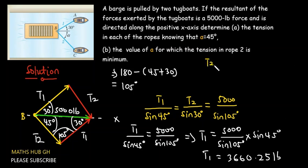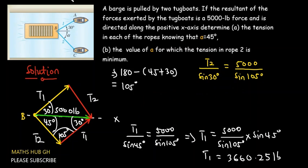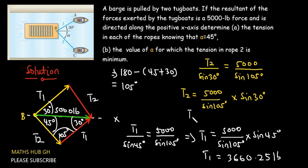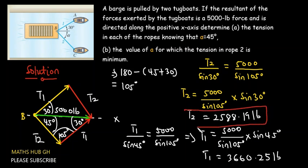Now let's find T2. For T2, you have T2 divided by sine of 30 degrees equal to 5000 divided by sine of 105 degrees. Solving for T2: T2 equals 5000 divided by sine of 105 degrees, multiplied by sine of 30 degrees. This gives us a value of 2588.19 pounds. That is the value of T2. That's how you calculate T1 and T2.